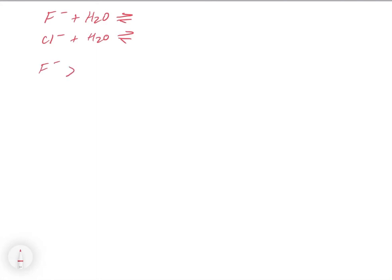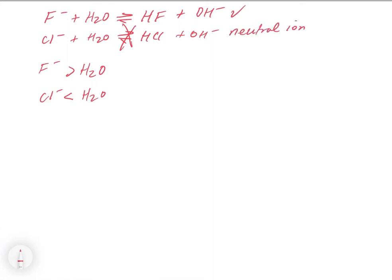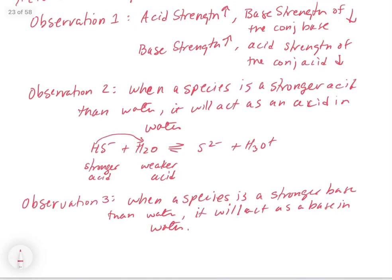Let's write down some reactions to explain that. We saw that F⁻ is a stronger base than water, so it's going to act as a base. The reaction of F⁻ with H₂O to make HF and OH⁻ will occur. On the other hand, Cl⁻ plus H₂O — Cl⁻ is a weaker base than water, so we are not going to get a reaction with water. Cl⁻ is just going to sit in the water as Cl⁻ and it's not going to take back any protons to go back to HCl. We're not going to make HCl and OH⁻. We call Cl⁻ a neutral ion and F⁻ a basic ion.